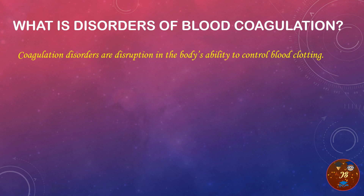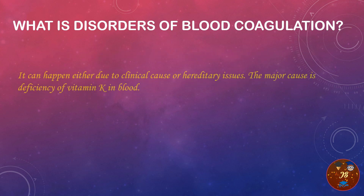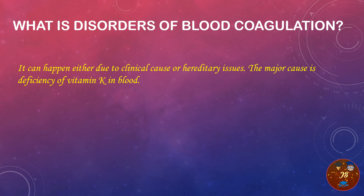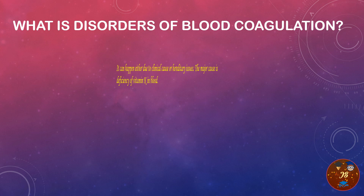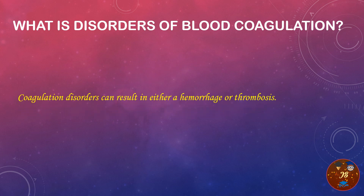This can be called a coagulation disorder. It can happen either due to a clinical cause or a hereditary issue — it can be descended from ancestors. The major cause is deficiency of vitamin K in the blood. Vitamin K is a very important factor for the proper formation, maturation, and activation of platelets, and it helps in the process of blood coagulation.